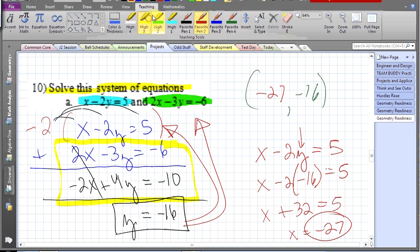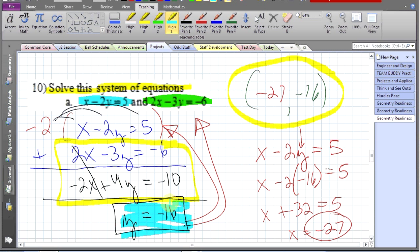I've written the answer in two different formats. One format is a coordinate form—I write x comma y. And the other solution, the other type of solution, is I just state the answers: x is negative 27 and y is negative 16. Okay, let's take a little break.